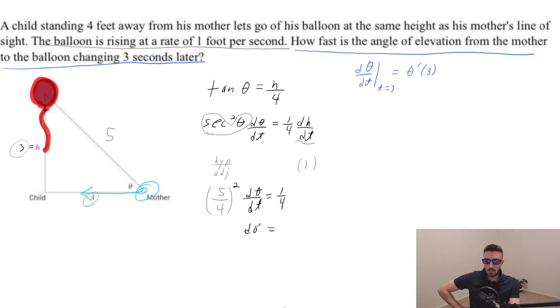And then d theta dt, the same thing as saying theta prime, equals one-fourth times four squared over five squared. And that's the same thing as four over 25. And there you go.